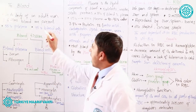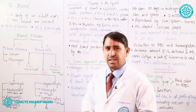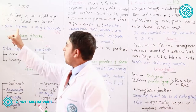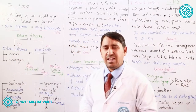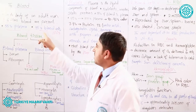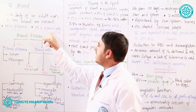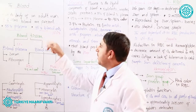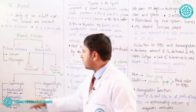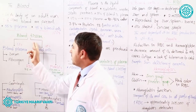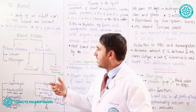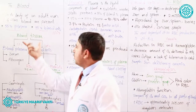If we take this blood and give it a percentage — 100 percent — from that 100 percent, 55 percent is plasma and 45 percent is blood cells. Plasma is the liquid part of the blood, and 45 percent consists of blood cells, of which there are many types.